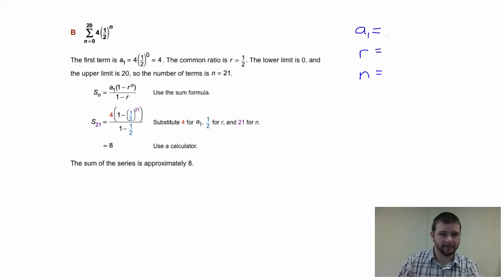A sub 1, well, be careful, a very common mistake would be to substitute 1 in right away to find a sub 1. Notice our lower limit in this case is 0, so that will provide our first term when we substitute 0 into the explicit formula. Note, 1 half to the 0 power is 1, and 1 times 4 is 4. Our common ratio, we can extract, that's the value in parentheses raised to the power of n, so 1 half.